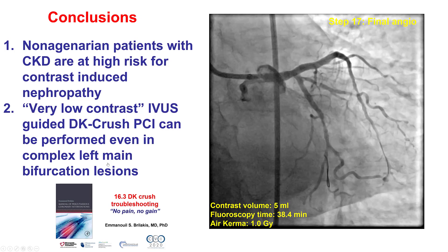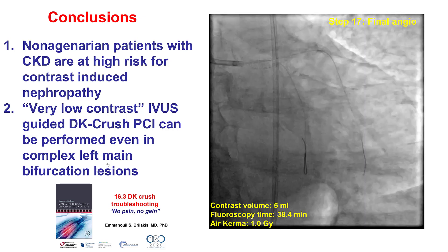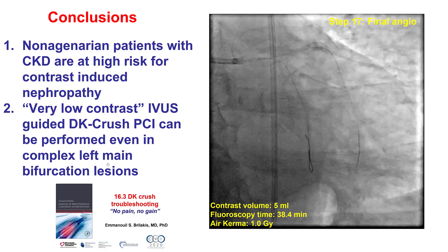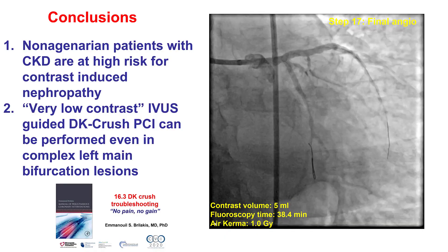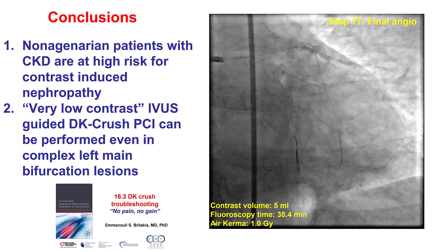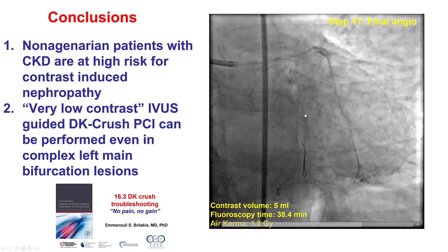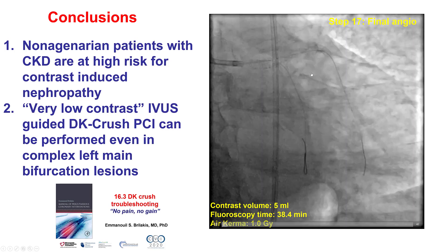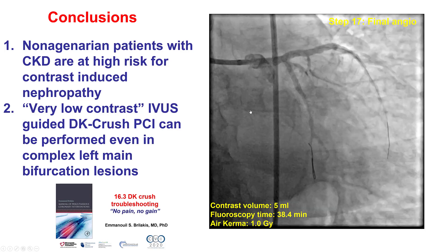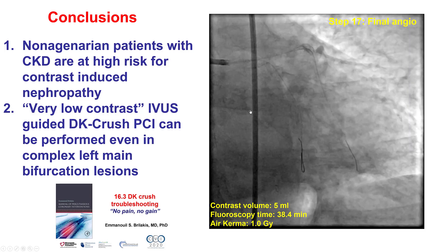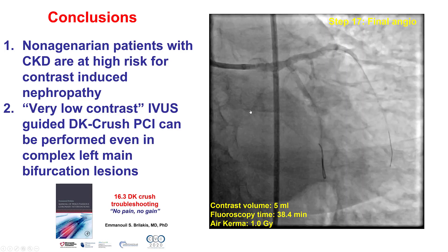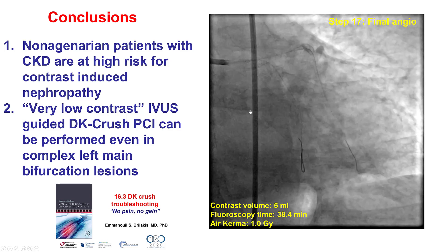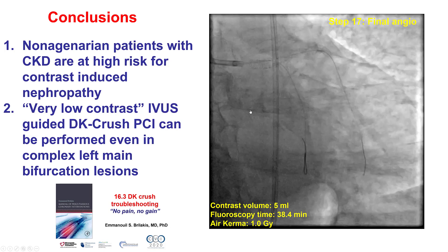Intravascular ultrasound showed a nice result. We could have stopped without doing any contrast injections; however, given the calcification, we wanted to make sure there was no issue with perforation. Therefore, we performed one injection with 5 mLs of contrast, which was very reassuring — it demonstrated good flow in both the LAD and the circumflex, and importantly also good flow into the obtuse marginal branch. I am personally a little skeptical of performing zero contrast PCI; I think performing one or two injections to ensure safety has very little risk of causing acute kidney injury even in patients with advanced chronic kidney disease, and provides a layer of safety against complications.